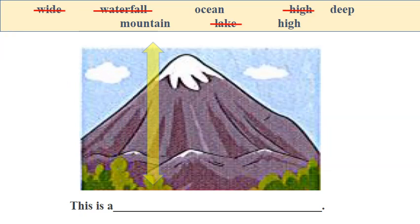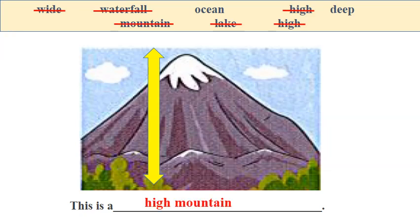Now, we move on to the next one. Look at the picture and the sign. How can you write for it? Have you finished? Now let's check the answer. This is a high mountain. So you use high and mountain to make the sentence.